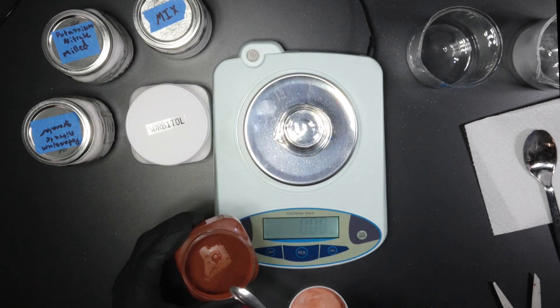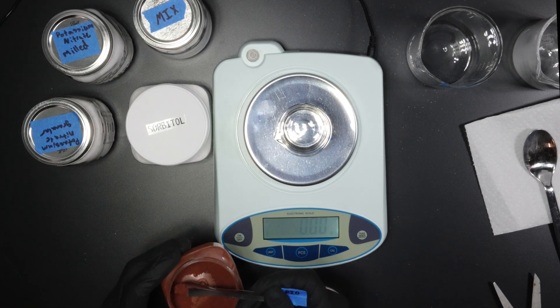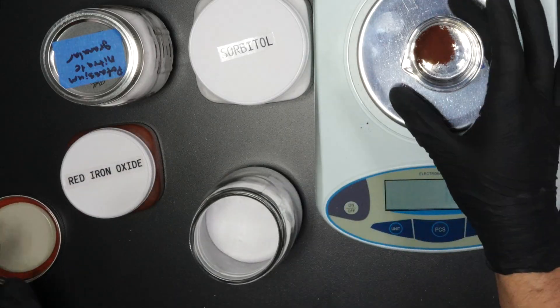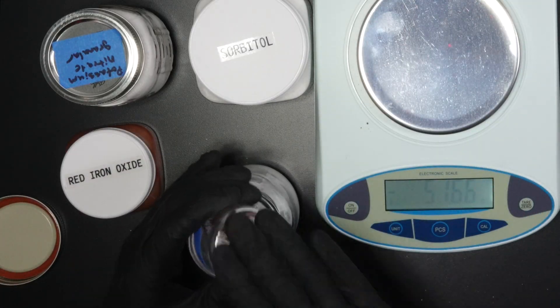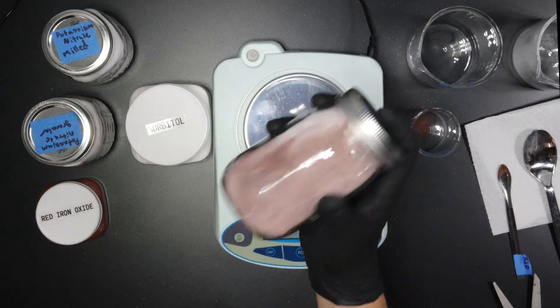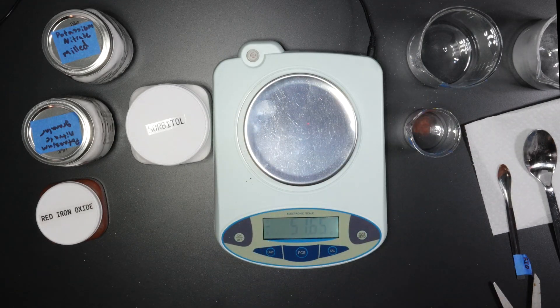Finally, I measure out 1.87 grams of red iron oxide and add it to the mixing jar. Once everything is measured, I shake the jar for a full minute to make sure everything is thoroughly mixed.